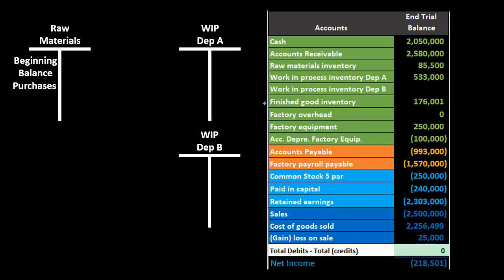Once we reach finished goods, we're at a similar point as a merchandising company — we sell the finished goods and record the cost of goods sold at the point of sale. The key difference between a process cost system and a job cost system is that we track by process rather than by job.